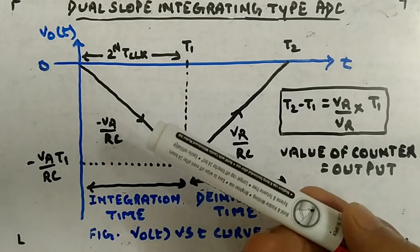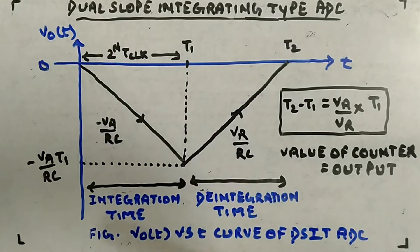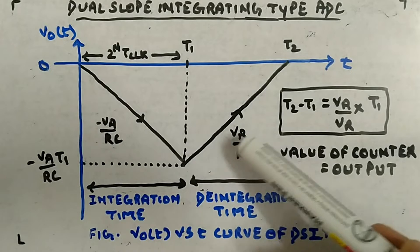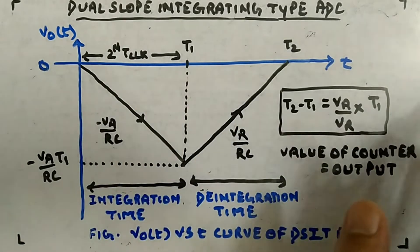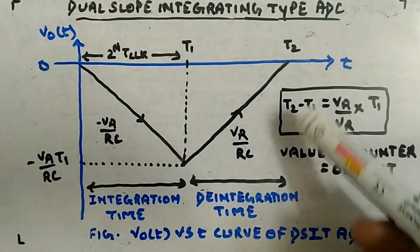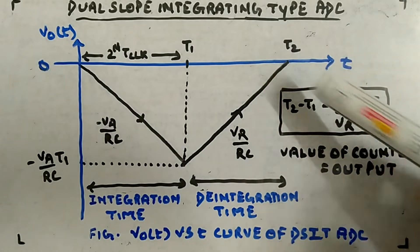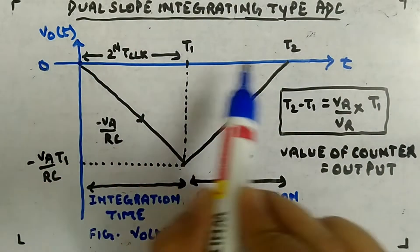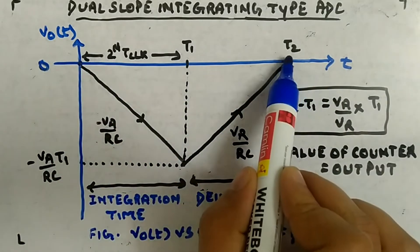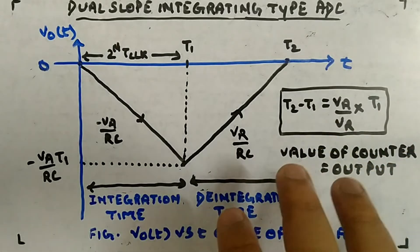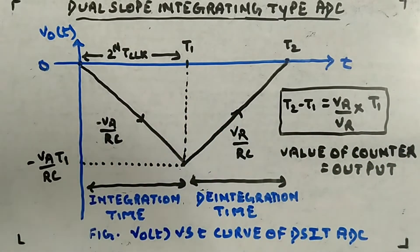The de-integration slope is fixed because it is connected to Vr, not the input. The integration slope depends on the input. The de-integration time depends on the input but the slope is same. The expression is: t2 minus t1 equals Va divided by Vr times t1. Total conversion time runs from zero to t2. The counter output at t2 gives you the binary equivalent of your analog input Va.